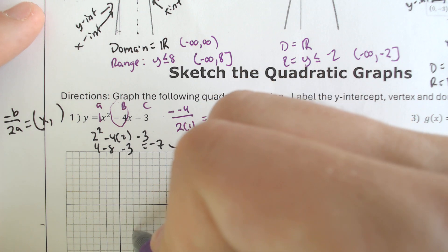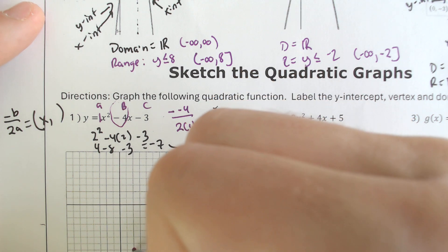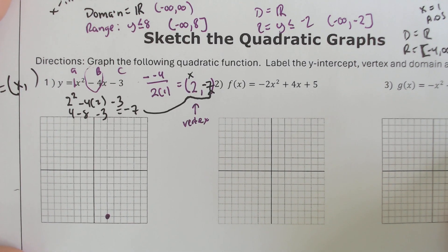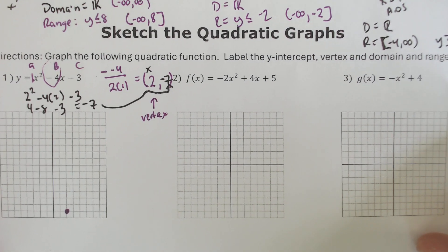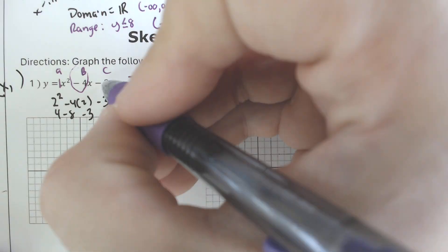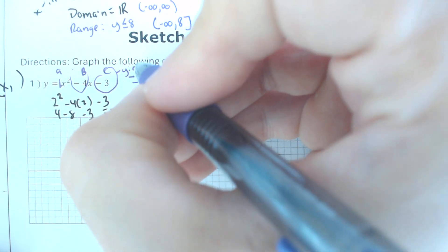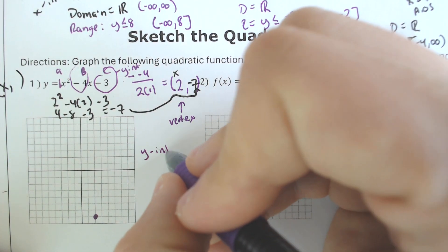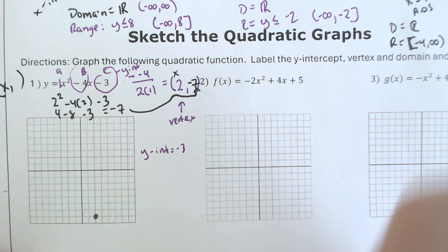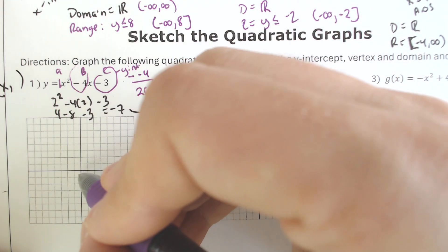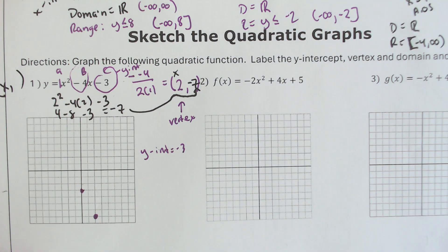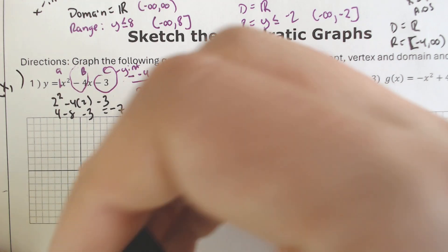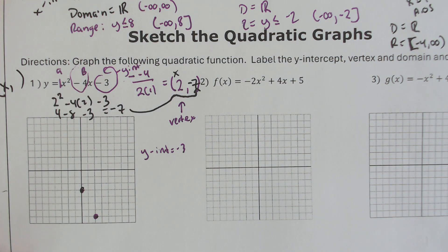A few more things. The vertex point is the most important point. The other point that you always want to plot is the y-intercept — this last number is always going to be your y-intercept. So your y-intercept in this case is negative 3, technically 0, comma, negative 3. The benefit of doing the vertex and the y-intercept is you always get a sense of what is happening.